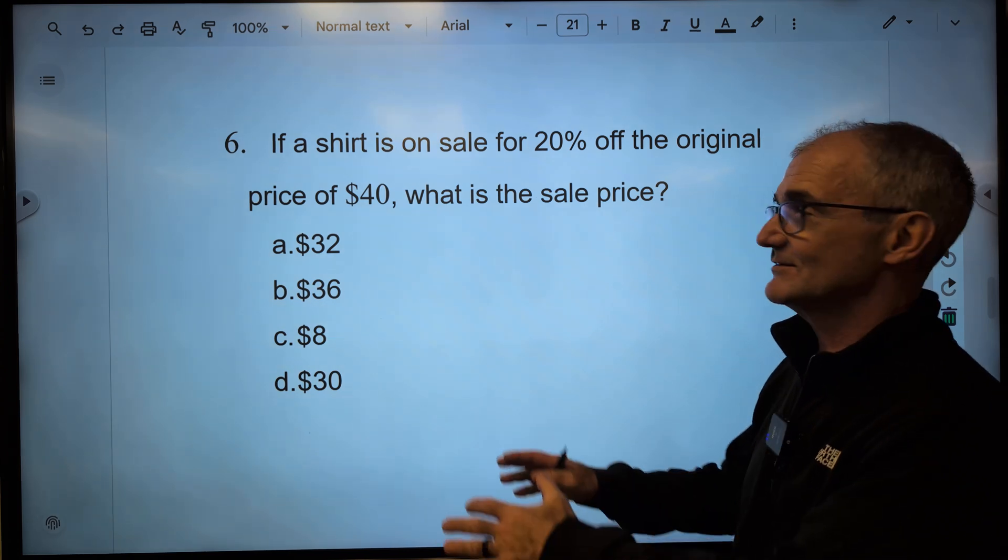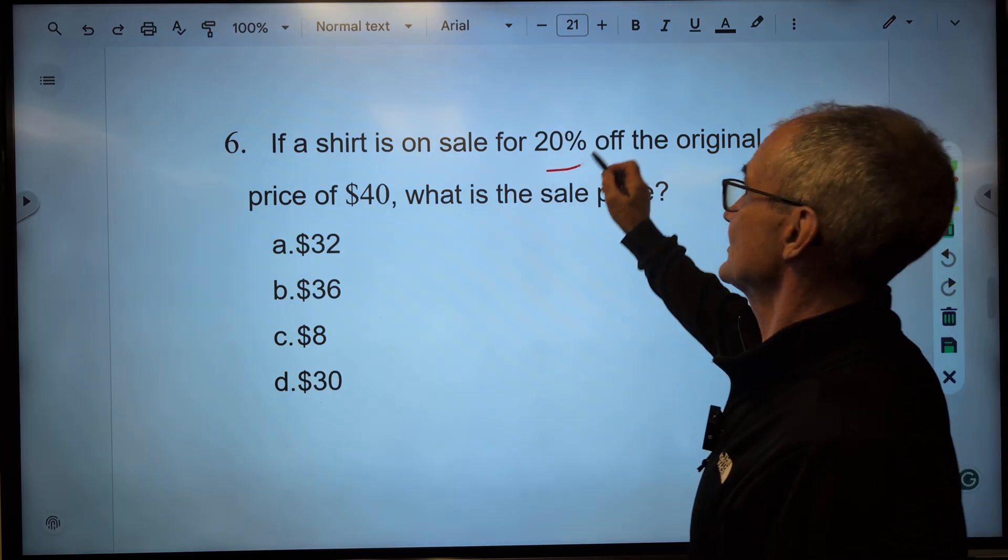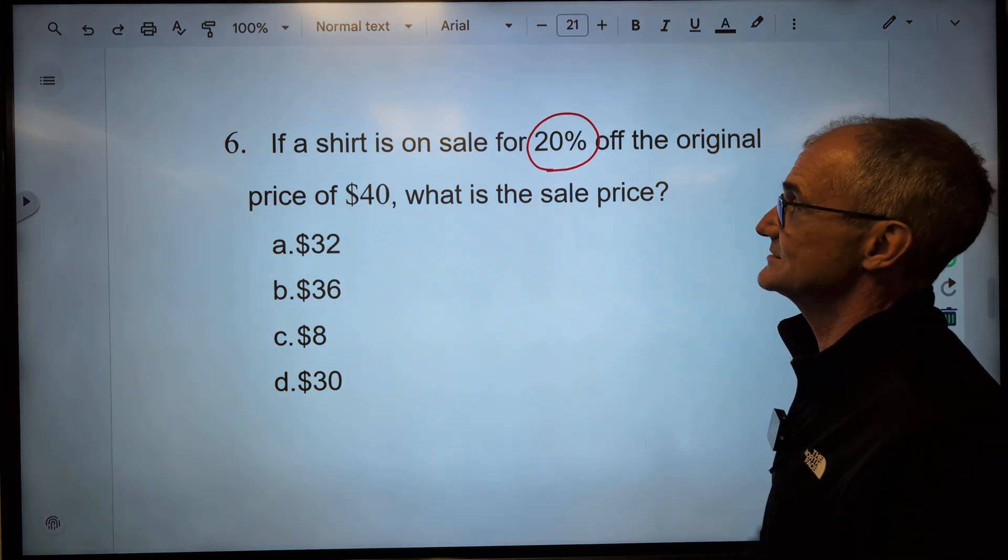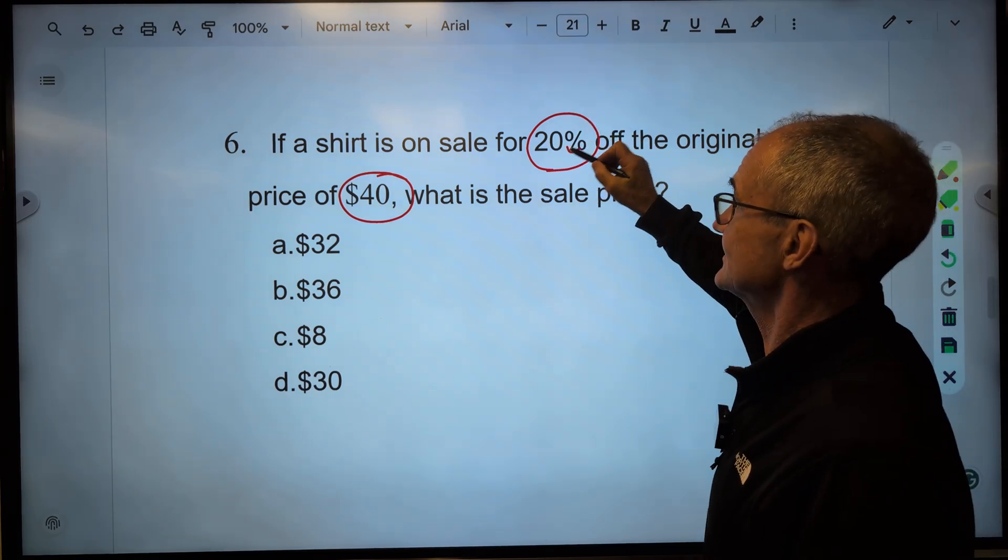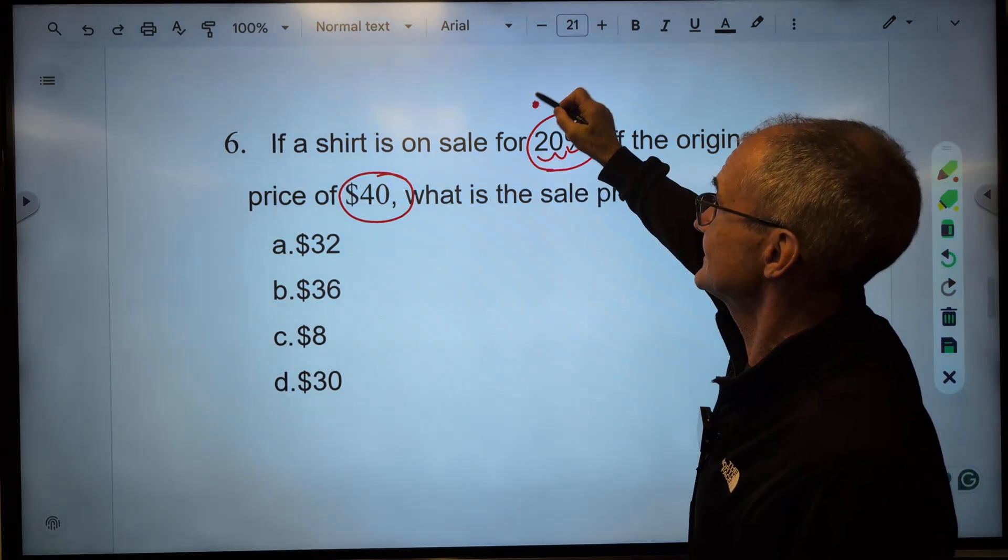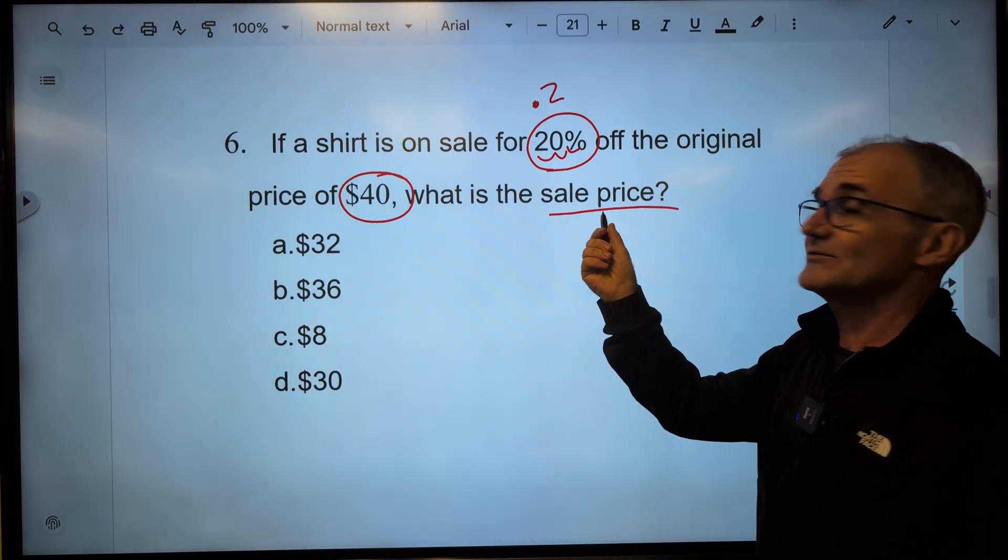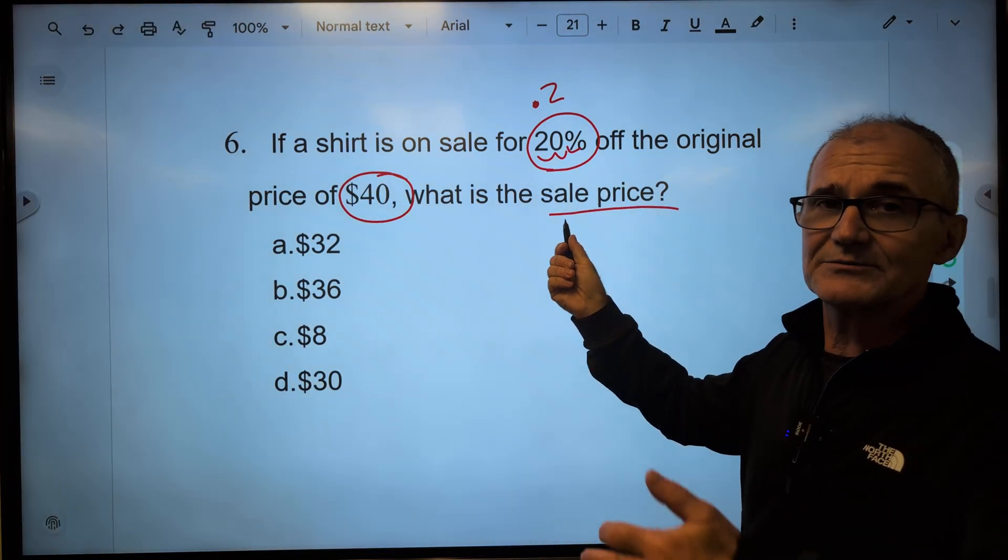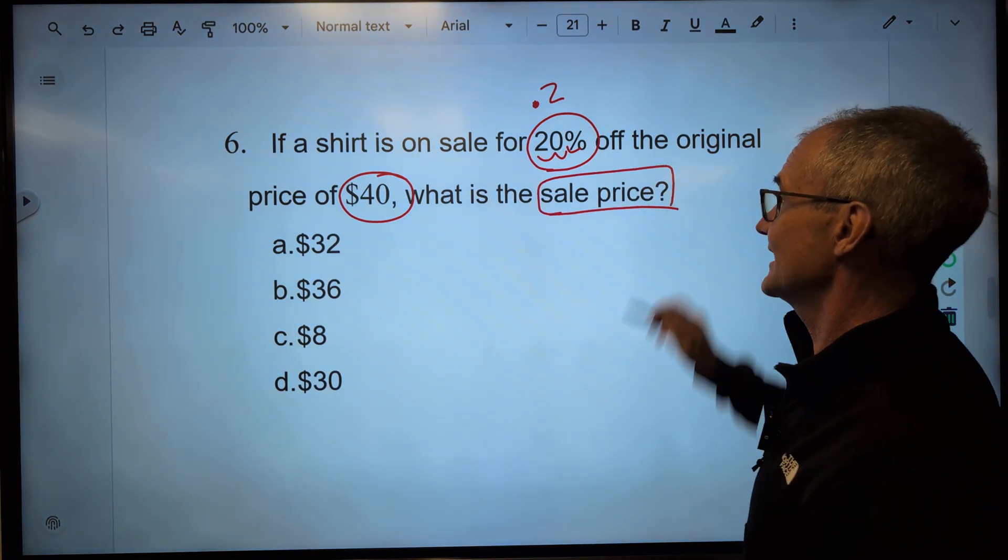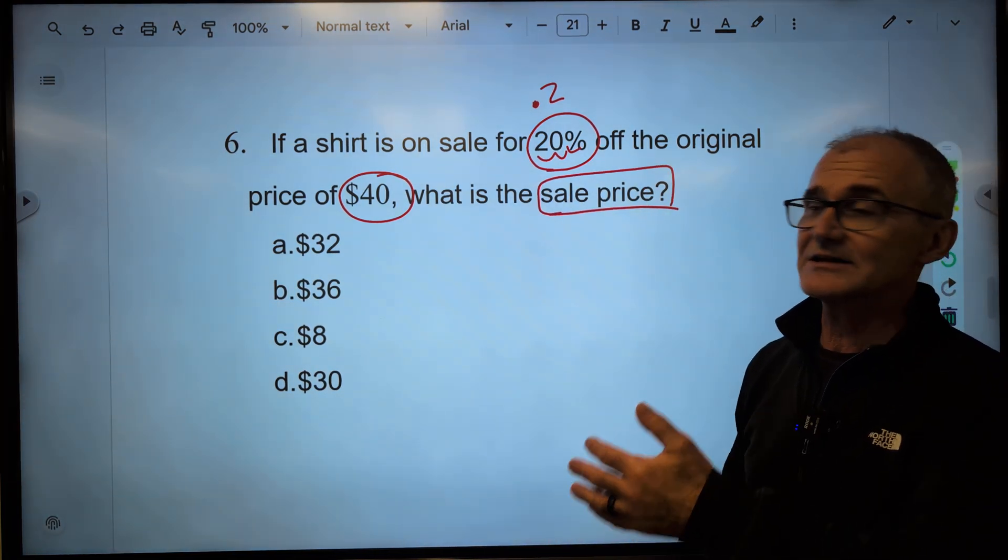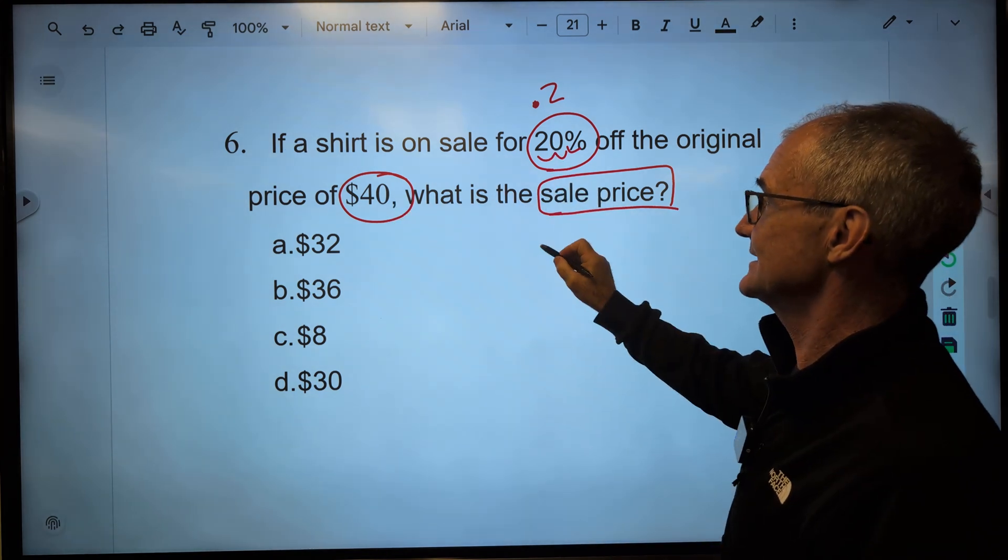But right now, we're just kind of seeing where we are with this 10 problem test. Again, pause the video, give this one a try, unpause, see how you do. A shirt on sale for 20% off the original price of $40. Take that 20%. Again, an arrow shooting it over two places, the equivalent of 0.2. What is the sale price? That's actually the most important part of the problem to identify what you are asked for. I'm not looking for how much it was off. I'm looking for the new price, the sale price.